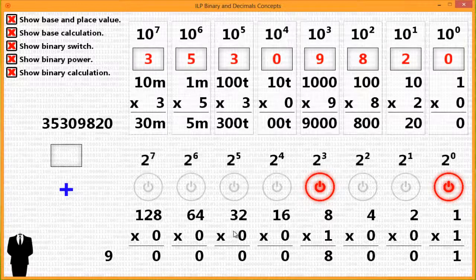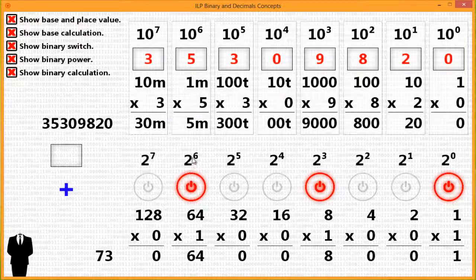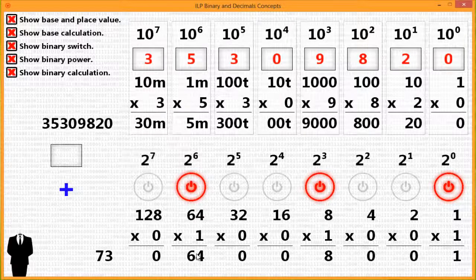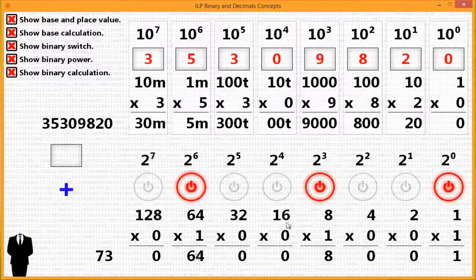If I was to turn the switch on at 2 to the 6th power, and 2 to the 6th power represents 64, or the 6th position of the base 2, then 64. And then you add it. 64 plus 8 plus 1 would be 73.